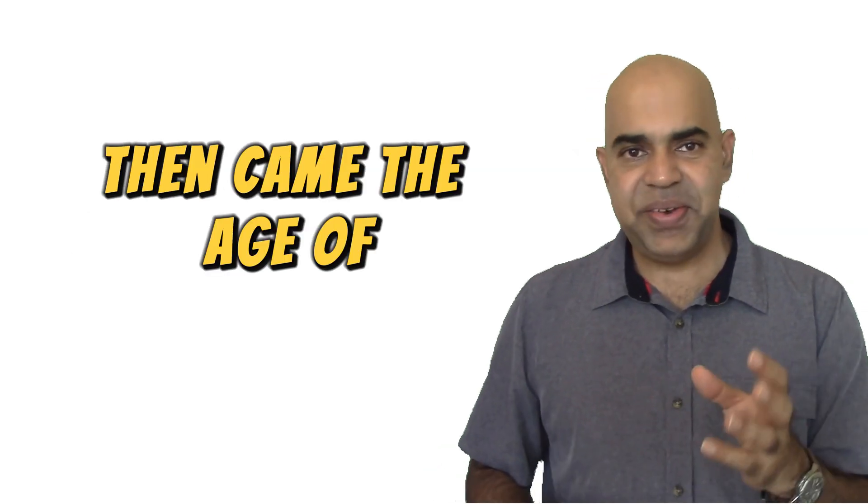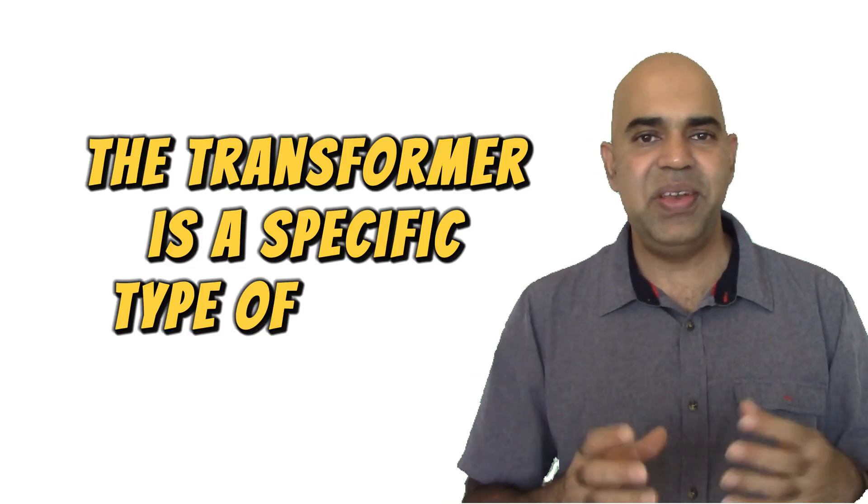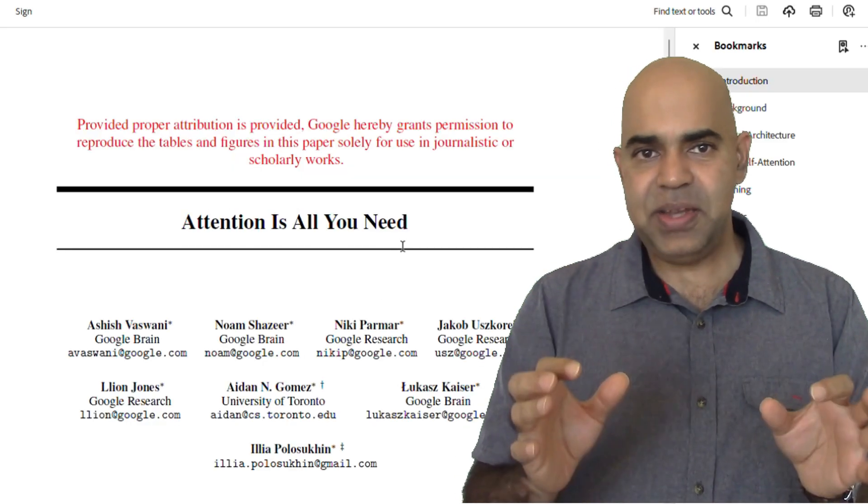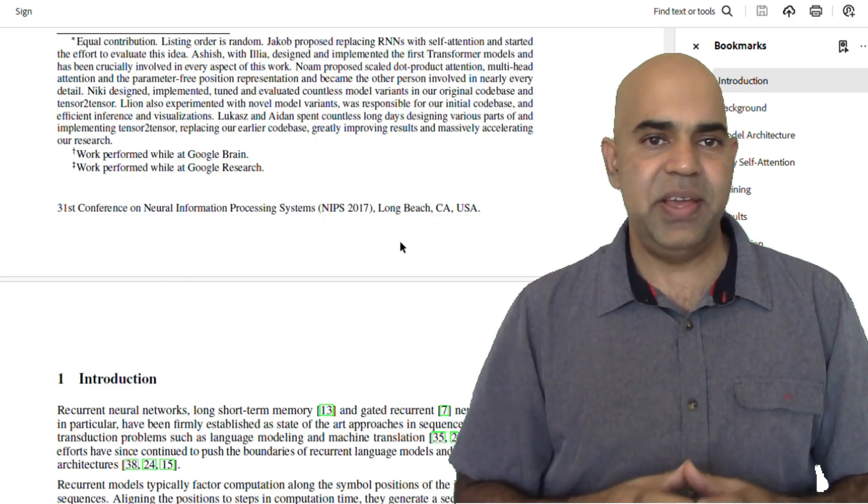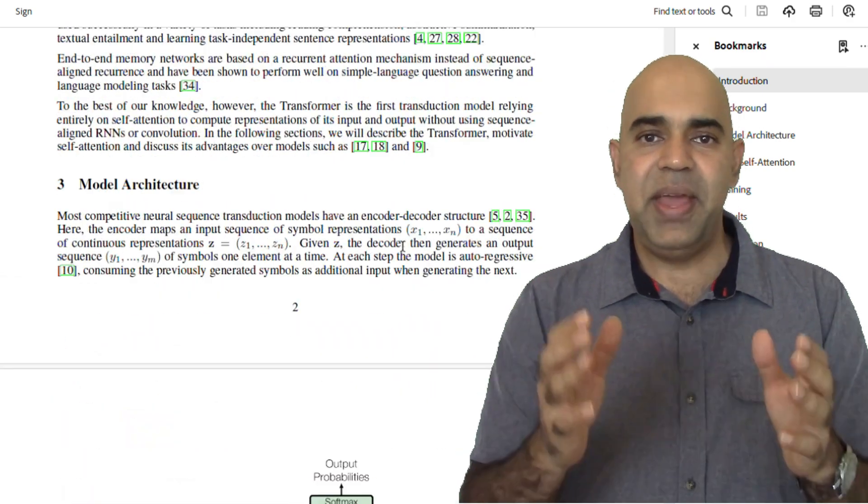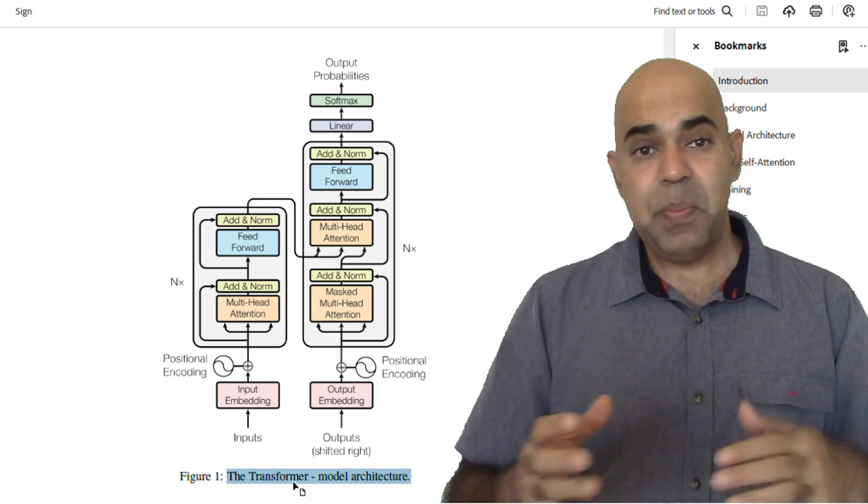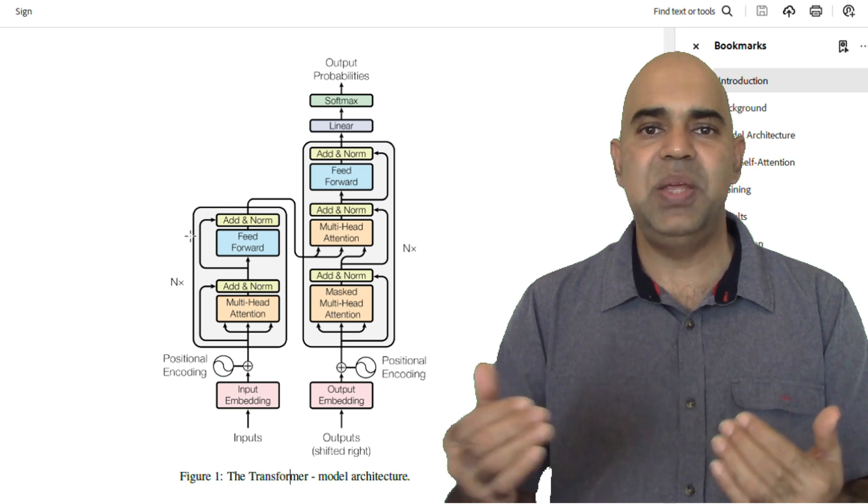Then came the age of transformers. The transformer is a specific type of neural network architecture that was introduced in the paper, Attention is All You Need, by Vaswani and fellow scientists in 2017. A transformer is designed to handle sequential data, but unlike RNNs or LSTMs, it does not sequentially process the data.